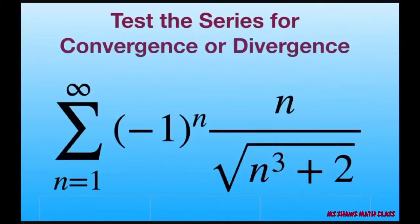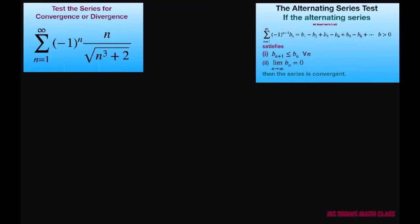Hi everyone. We're going to test the series for convergence or divergence. We're going to use the alternating series test. So what we want to do is look at this as a whole — we're going to call this whole thing a sub n, and then we can also write b sub n.